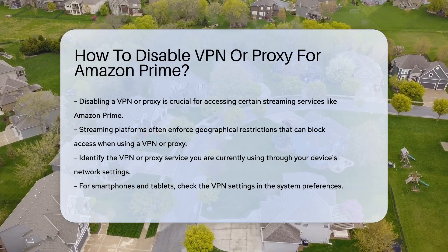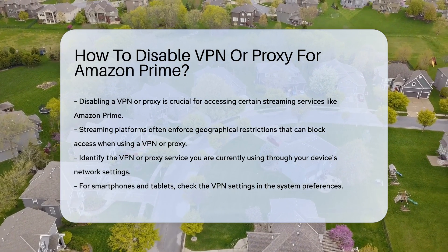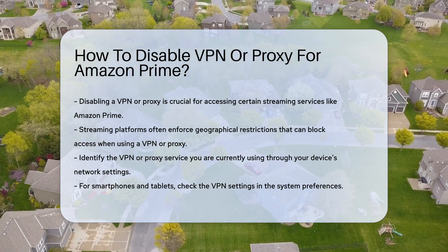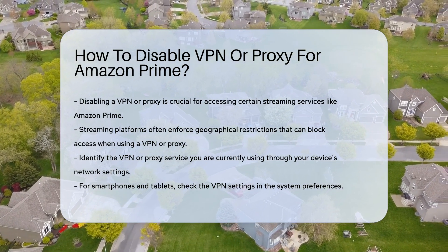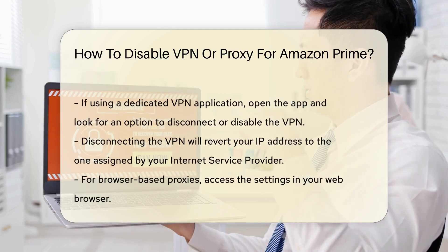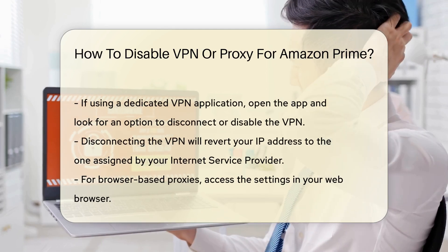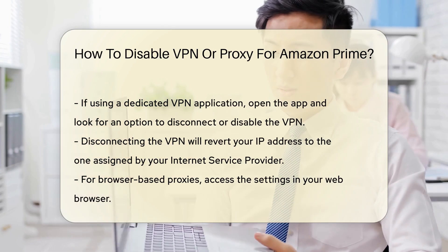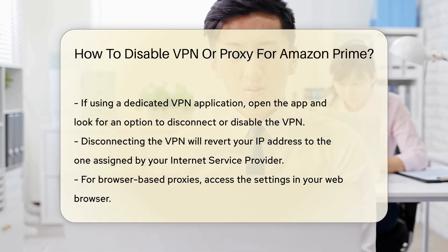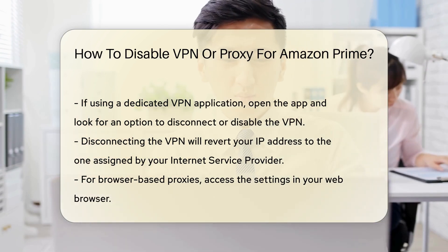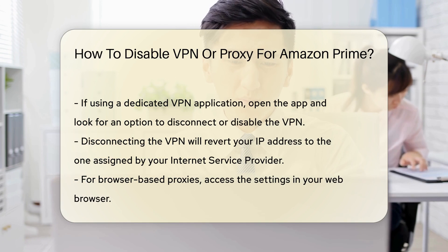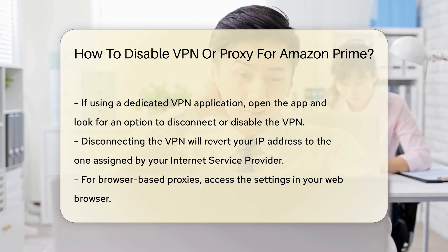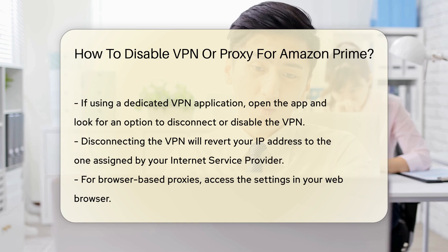First, identify the VPN or proxy service you are currently using. This can usually be found in your device's network settings. For devices like smartphones or tablets, check the VPN settings in the system preferences. If you are using a dedicated application for the VPN, open the app and look for an option to disconnect or disable the VPN connection. This action should revert your IP address to the original one assigned by your internet service provider.